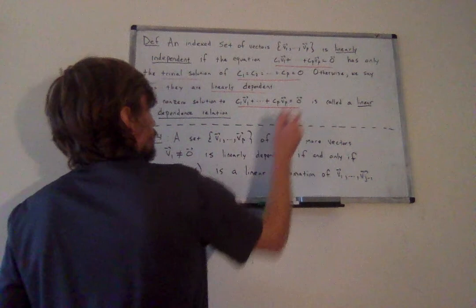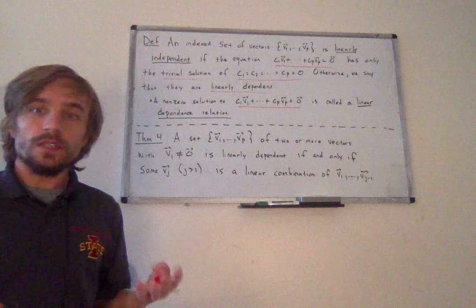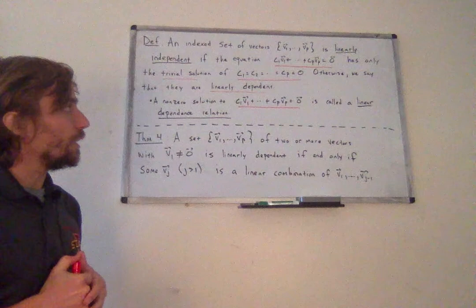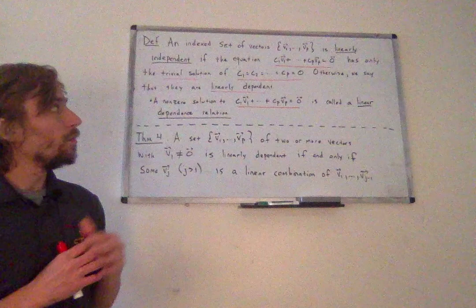If they are not linearly independent, we say the vectors are linearly dependent. We also define a linear dependence relation: if there is some non-zero solution to this equation — and remember, non-zero solution doesn't mean all constants are non-zero, just at least a few of them — then we call this a linear dependence relation. Linearly independent and linearly dependent are defined exactly the same way as before.